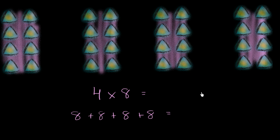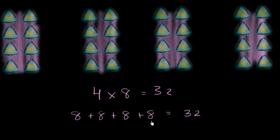There are a couple of ways you could think about this. You could have literally just counted these, or you could skip count by eight: eight, sixteen, twenty-four, thirty-two. Or you could have said eight plus eight is sixteen, plus eight is twenty-four, plus eight is thirty-two. Or you could have literally just counted the triangles here.